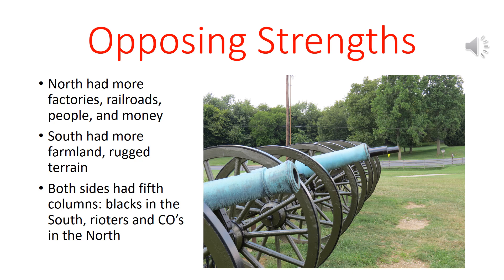Let's take a look at the varying strengths of both sides. The North had more railroads, factories, people, and money. The South, however, had more farmland and was usually able to supply itself with crops until towards the end of the war when Sherman started burning down Georgia. The South also had rugged terrain, which made many places hard to assault — part of why it took the North so long. Both sides suffered from fifth columns. There were blacks in the South who were not loyal to the flag, and in the North there were rioters in big cities and conscientious objectors.